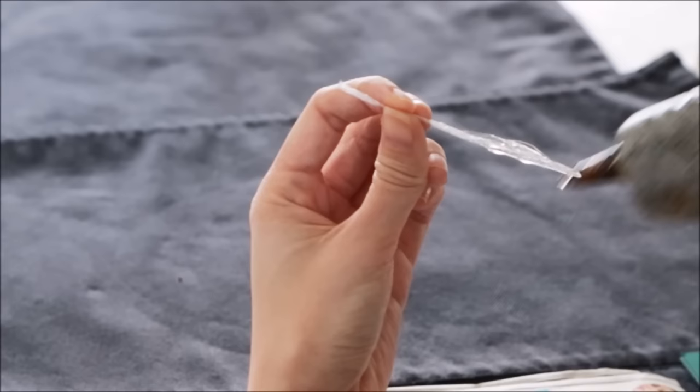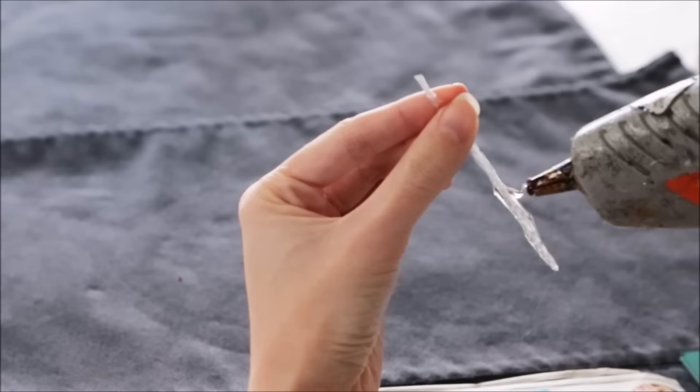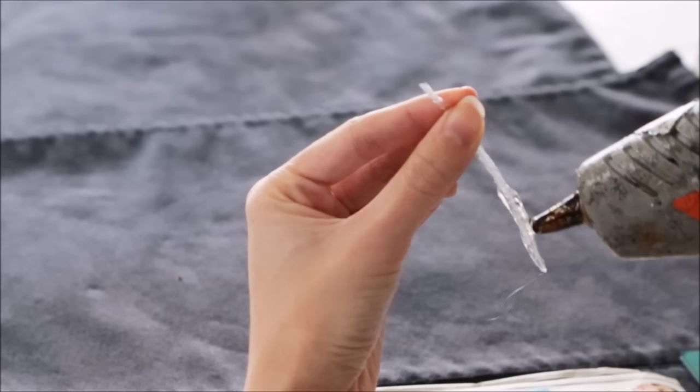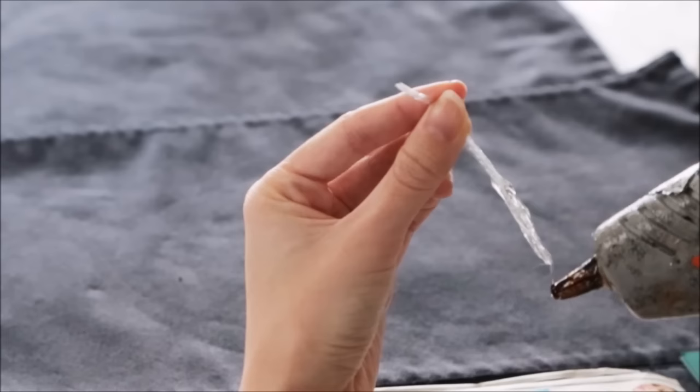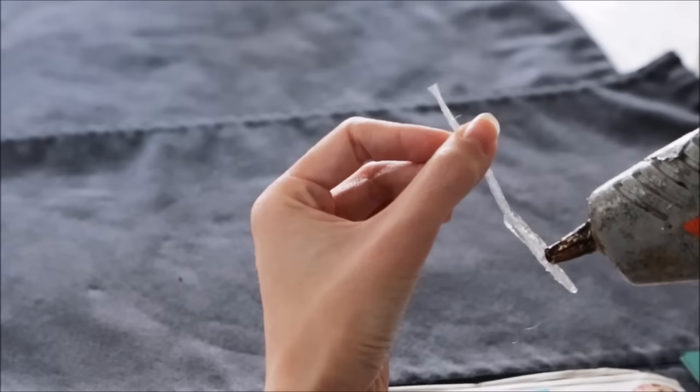If you plan on making larger icicles, you may want to use clear cellophane instead of the plastic wrap, just to have a sturdier core. But for these small ones, what I really like about the plastic wrap is the way it crinkles and melts when you apply the hot glue. This is what really gives these icicles that realistic look.